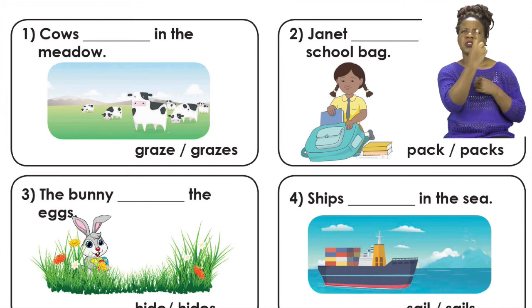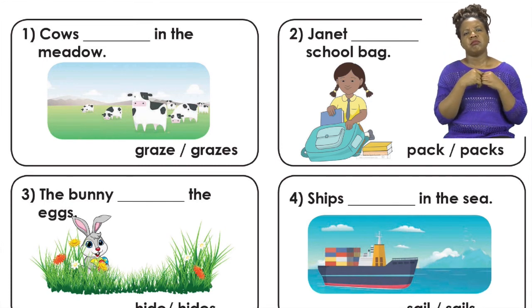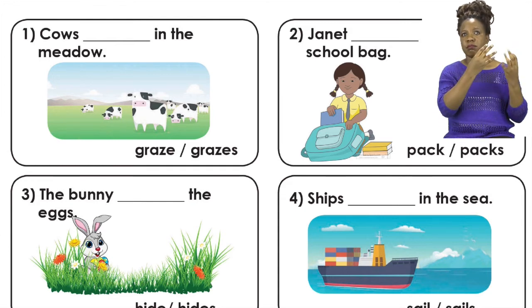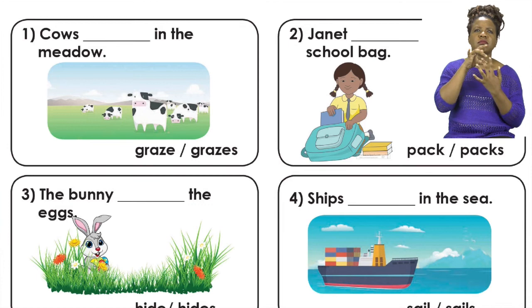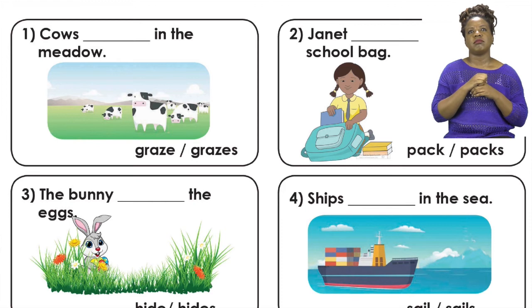Now cows, is it one or two or more? Well, from the picture, you can see more than one cow. So we know that this is plural. So our subject is plural. When our subject is plural, that means our verb will not have an S. So in this case, the word we are going to choose is the word graze. Now our sentence will be complete. Cows graze in the meadow.